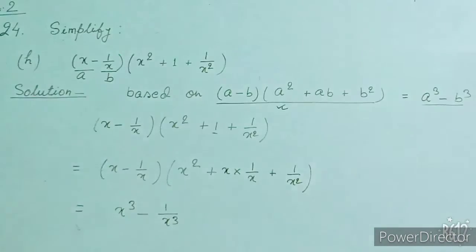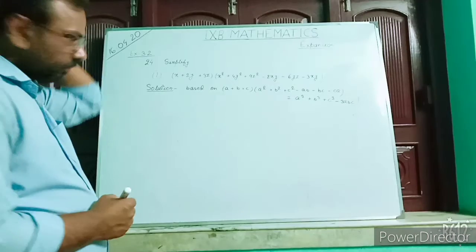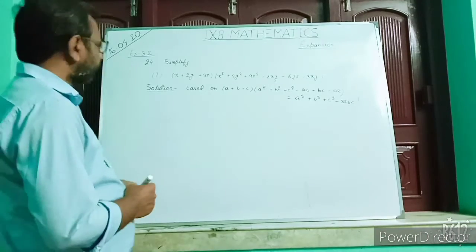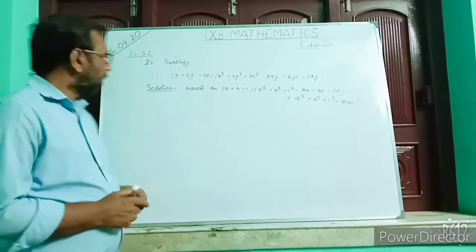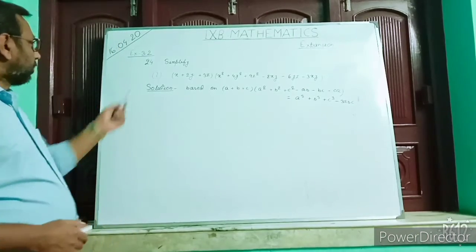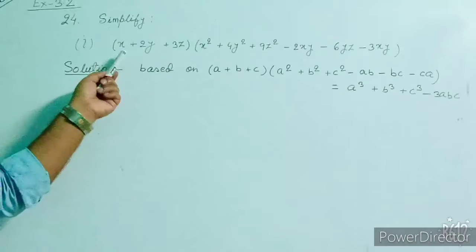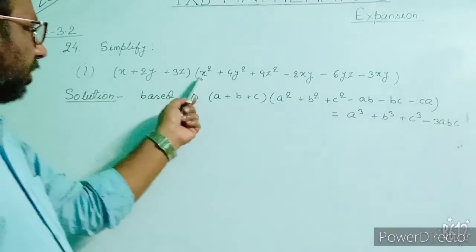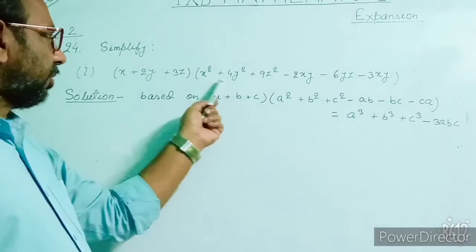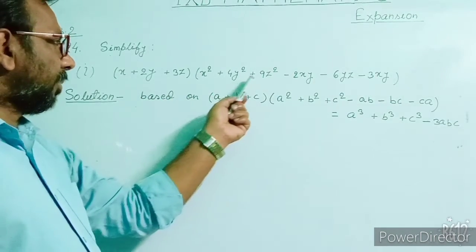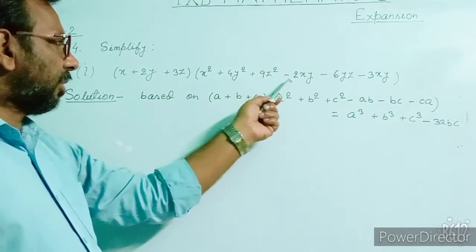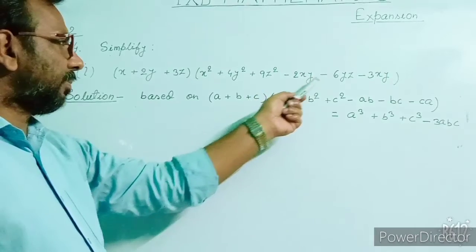This became the solution. Question number 24I: Simplify x plus 2y plus 3z, into x squared plus 4y squared plus 9z squared minus 2xy minus 6yz minus 3zx.